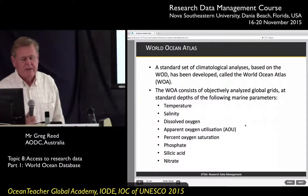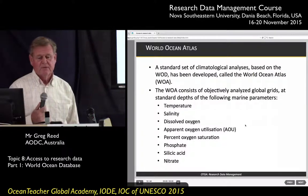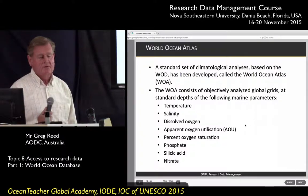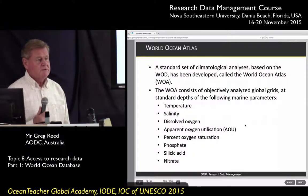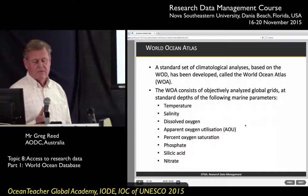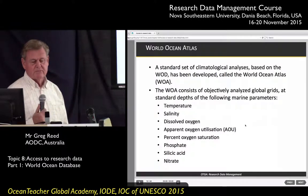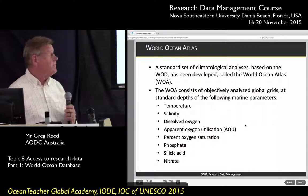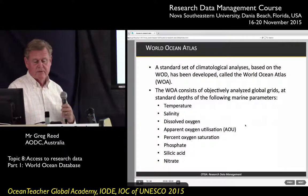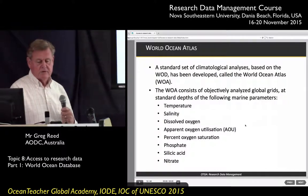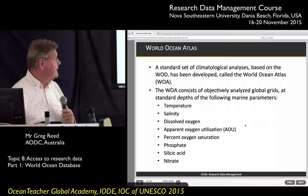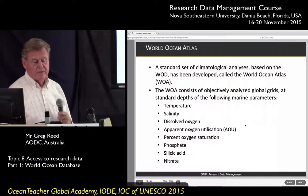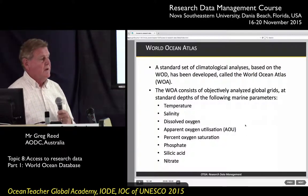Within the World Ocean Database, they've developed a product called the World Ocean Atlas. This is a standard set of climatological analyses from the data in the World Ocean Database. It consists of objectively analysed global grids at standard depths for the following parameters: temperature, salinity, dissolved oxygen, apparent oxygen, oxygen saturation, phosphate, silicate acid, and nitrate. The World Ocean Atlas is not the in situ data — it is a derived analysis of the data.